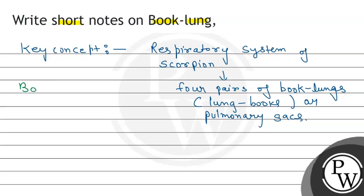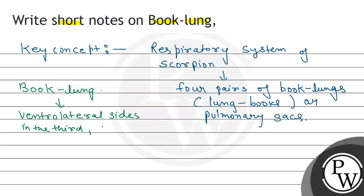So these Book Lungs are found situated on the ventrolateral side, in the third, fourth, fifth and sixth mesosomal or pre-abdominal segments.